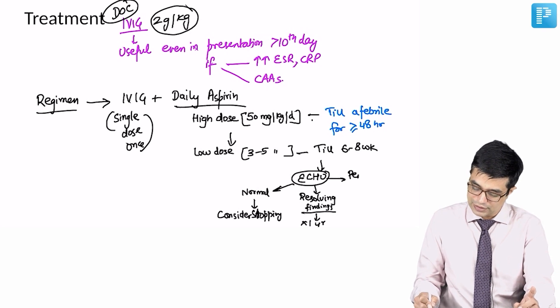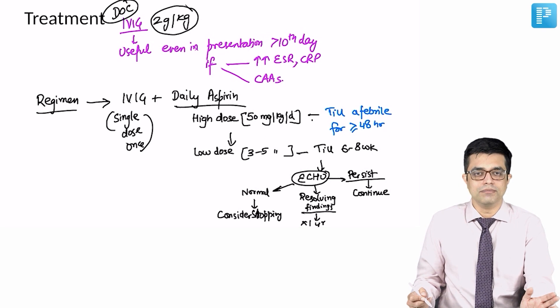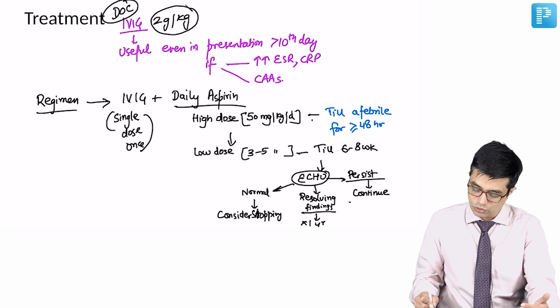And if there are persistent abnormalities, then you will continue giving aspirin. And if that aspirin is not getting tolerated by the child, you can consider anticoagulation.